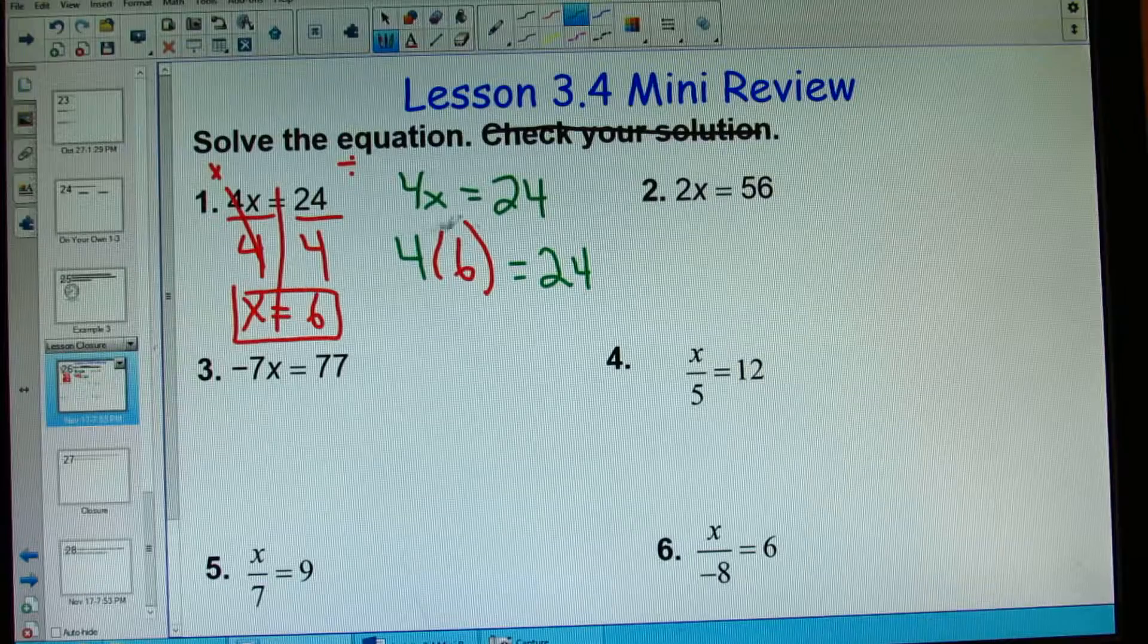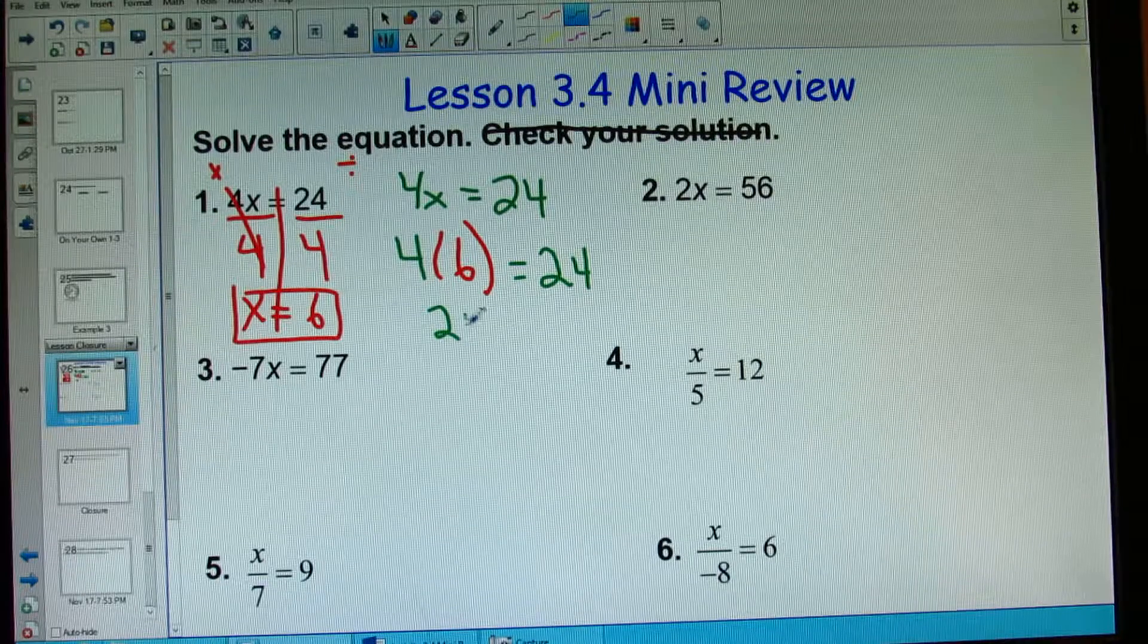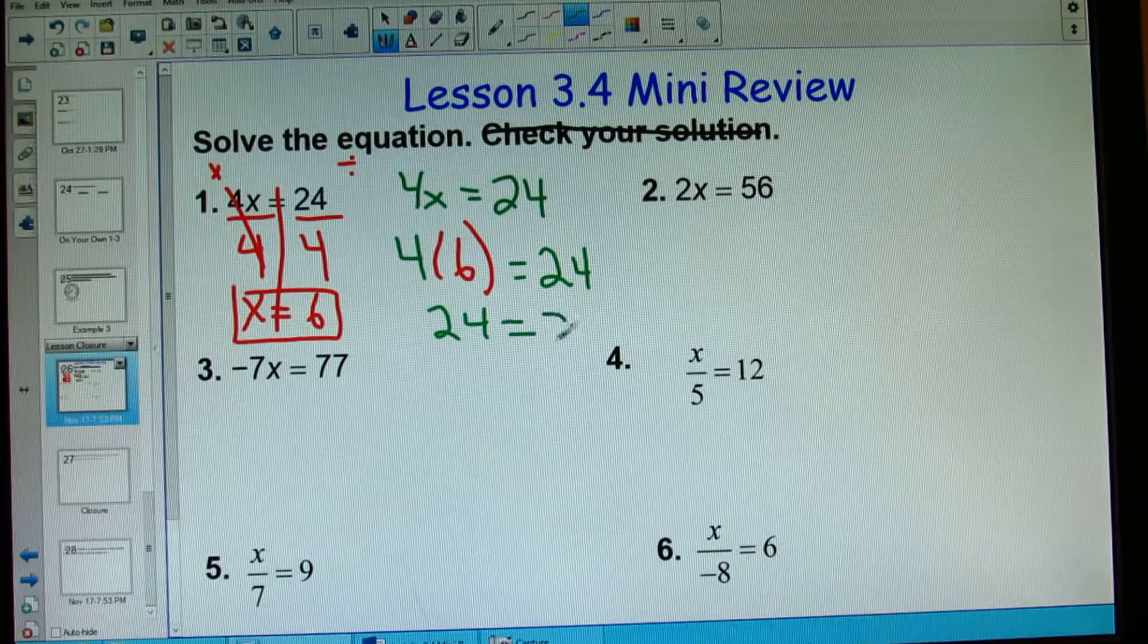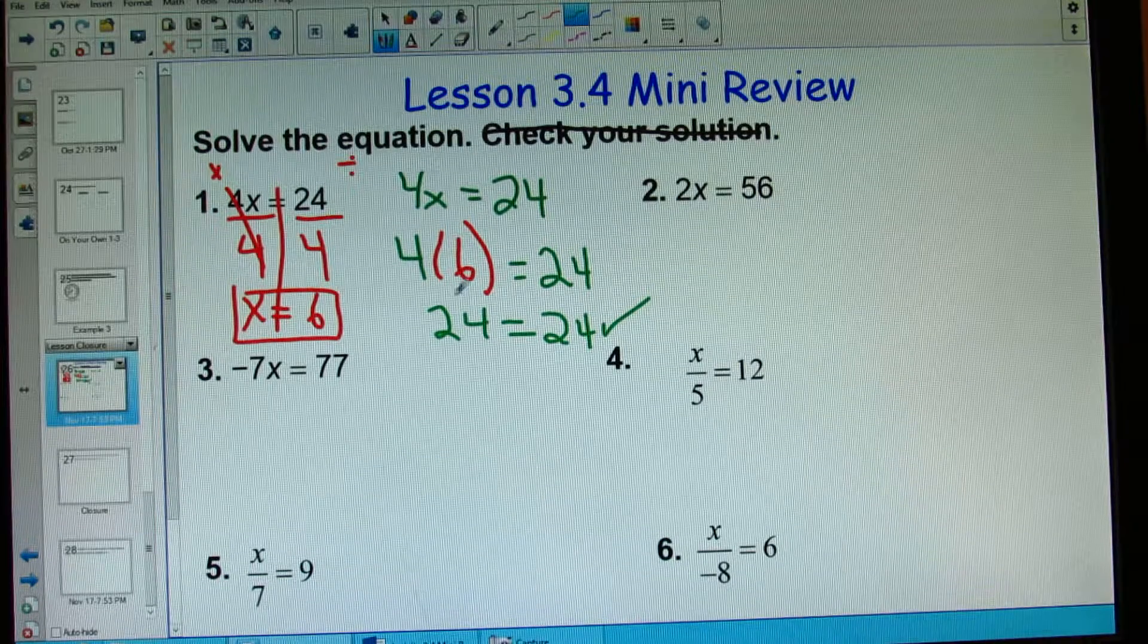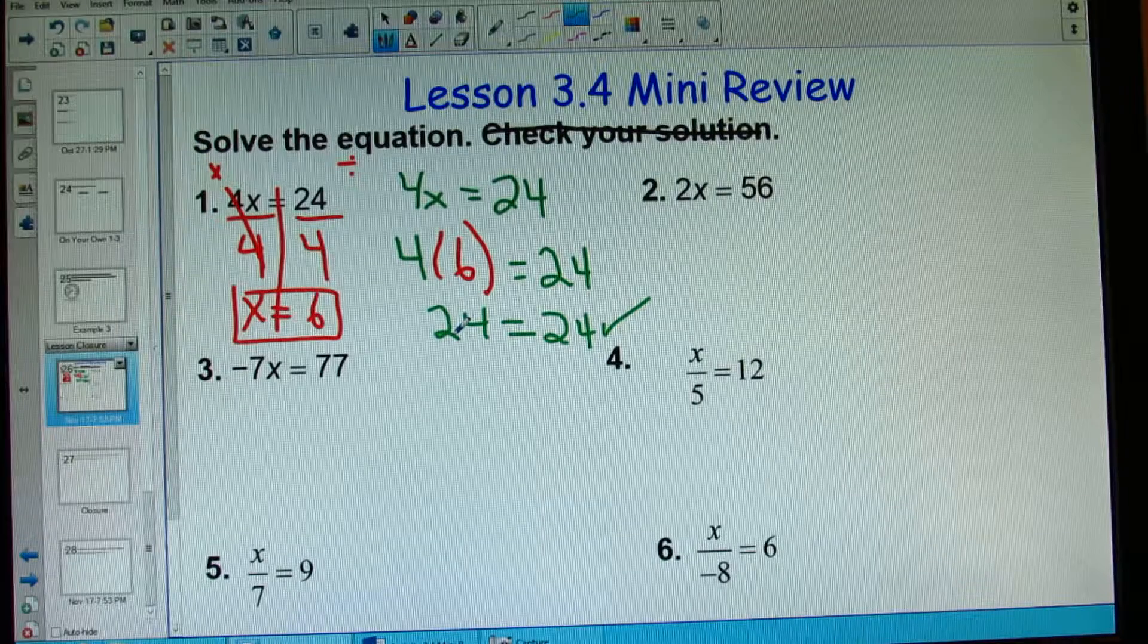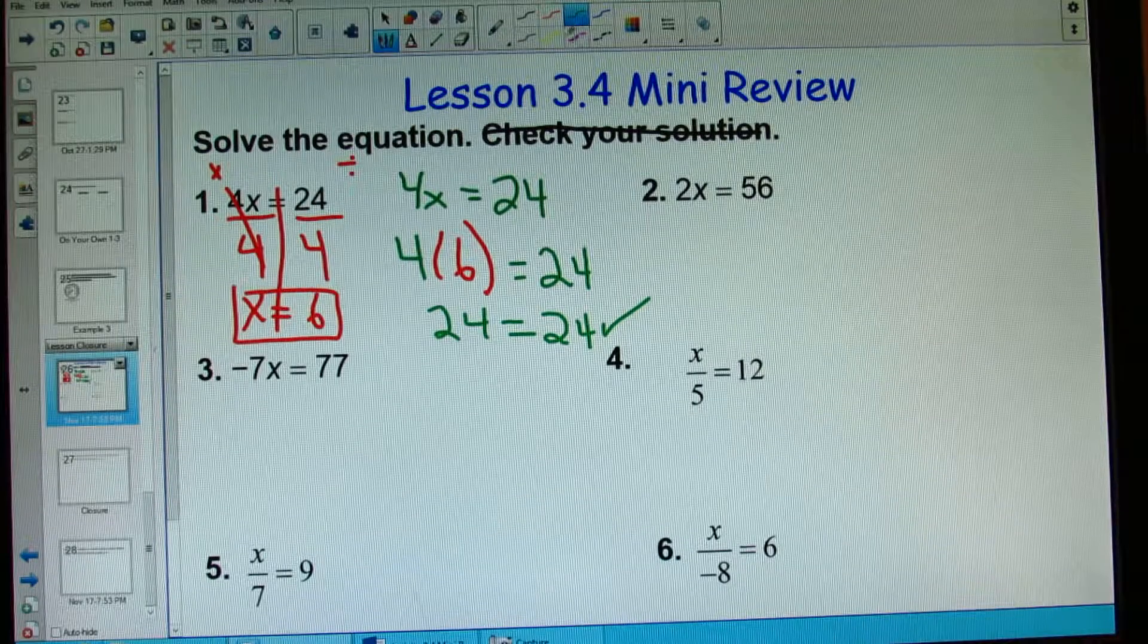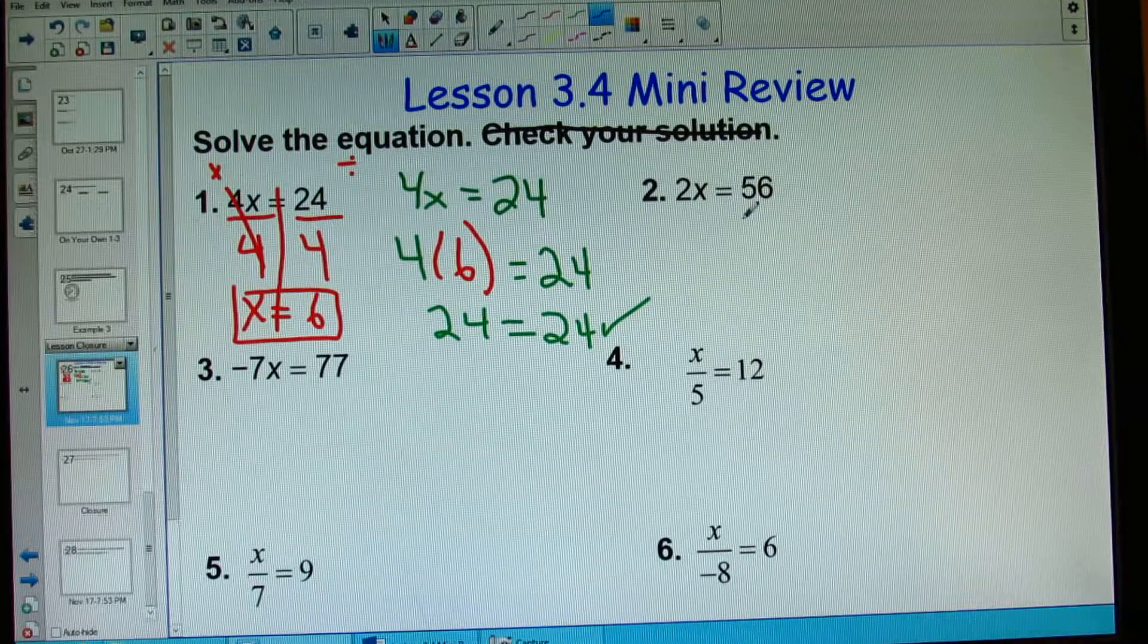And then finally, do the math. 4 times 6. Hey, guess what? That is 24, so I know I did it correctly. And that's when you can check. But this step is probably the most important because you actually need to see if you did it right. Moving on.